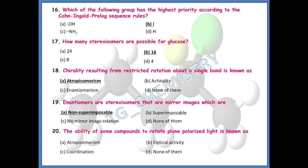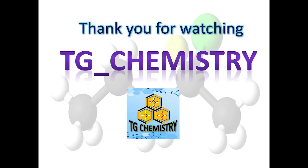The final question: the ability of certain compounds to rotate the plane of polarized light is known as what — atropisomerism, optical activity, coordination, or none of these? The right answer is optical activity. The ability of compounds to rotate plane polarized light is known as optical activity, and those molecules are called optically active molecules. Thank you for watching TG Chemistry — press the bell icon for notifications if you enjoyed the video.